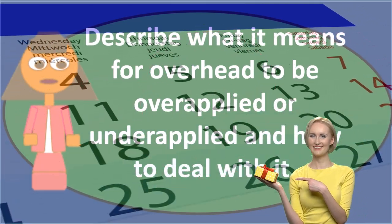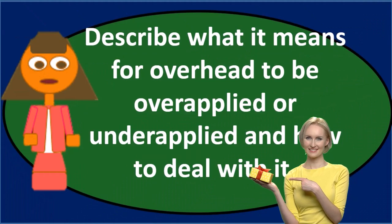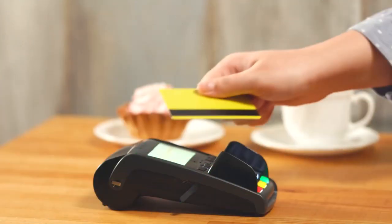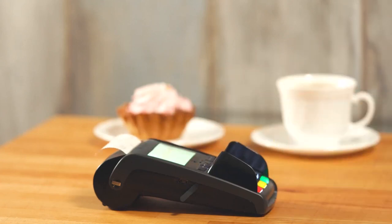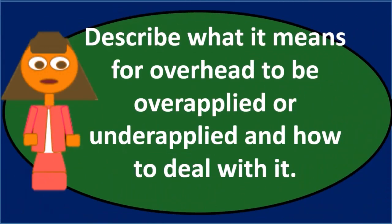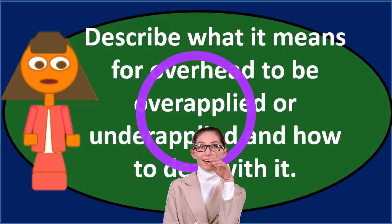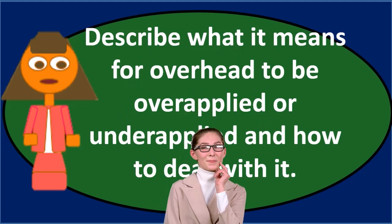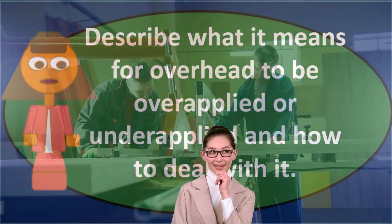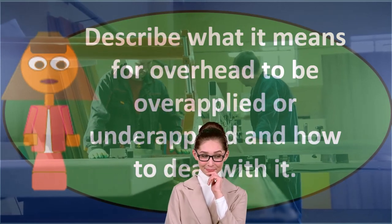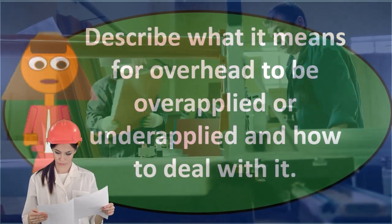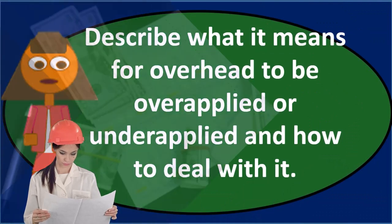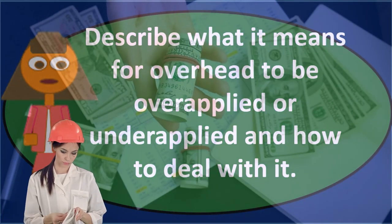Conceptually this makes sense — we know we'll be under or over applied since it's an estimate and we won't be perfect. But to really understand whether a debit or credit balance means under applied or over applied, and what to do about it, the best approach is to actually draw up a T-account. Put the actual costs — direct labor, direct materials overhead — on the left side, and put the allocation on the right side. Whatever estimate is off, we need to clear it to zero to start over next period.